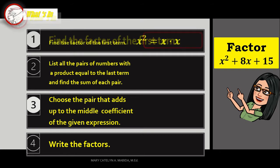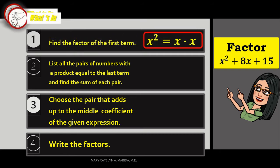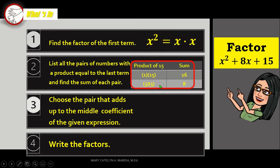Step 1: Find the factor of the first term. The factors of X squared are X times X. Step 2: List all the pairs of numbers with a product equal to 15, which is the last term, and find the sum of each pair.